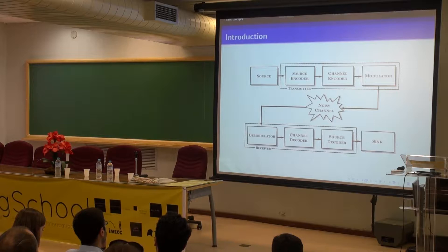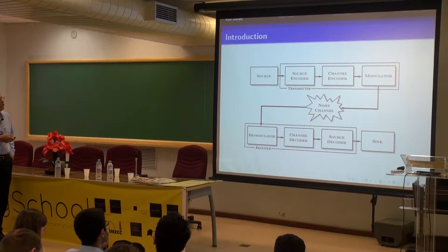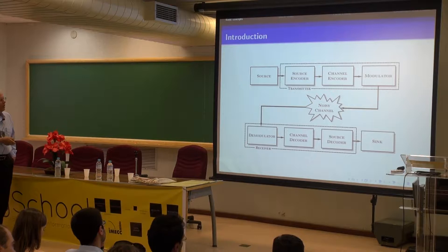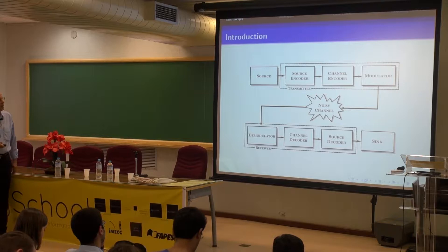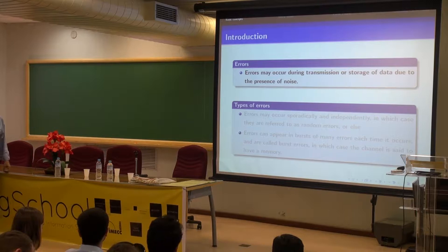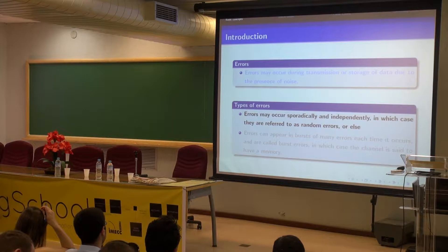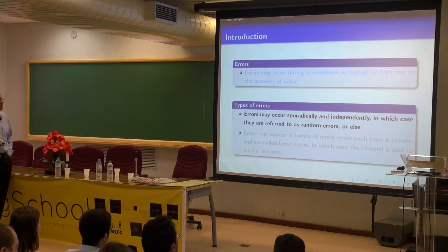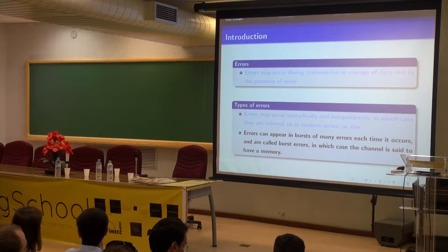In some systems, you can have source encoder combined with channel encoder, or encoder and modulator. Traditionally, this is the model we use. Talking about errors, they may occur either during transmission or storage of data. The types of errors can occur randomly and independently — we call them random errors. And if they occur always lumped together, we call them burst errors. A burst doesn't necessarily mean that all the digits affected are in error, but they have this characteristic, and you say that the channel has a memory.